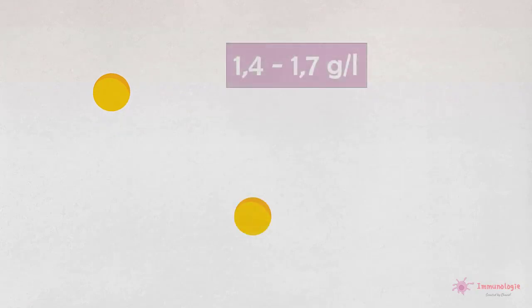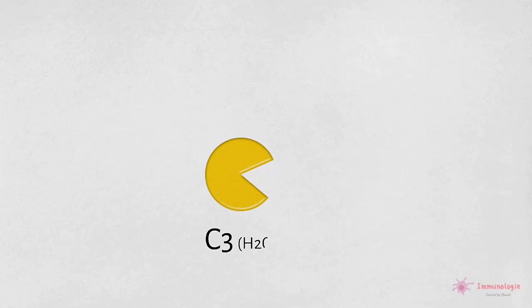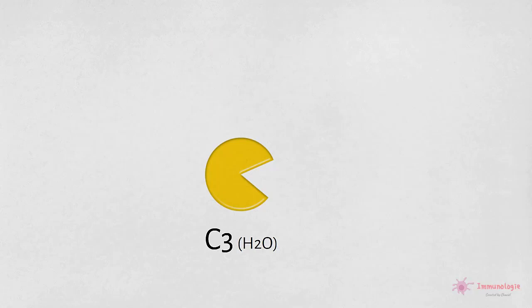La voie alternative est initiée lorsque le C3, qui est le composant du complément le plus abondant dans le sérum, subit une hydrolyse spontanée donnant la molécule C3H2O. En d'autres termes, le C3 plasmatique est continuellement clivé à faible taux, dans un processus appelé tick-over.